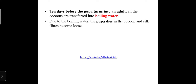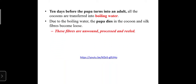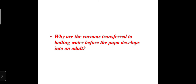Due to the boiling water, the pupa dies and the silk fibers of the cocoon become loose. These fibers are then unwound, processed, and reeled, giving us various types and colors of silk thread and silk fabric woven from silk thread. You have to answer: why are cocoons transferred to boiling water before the pupa develops into an adult?